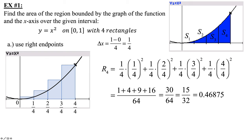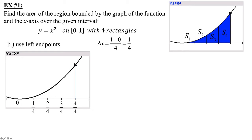Now for part B, left endpoints. The setup is the same for finding delta X: B minus A is 1 minus 0. L₄ means four rectangles using the upper left-hand corner. The first rectangle from 0 to one-fourth is tricky — the height of the upper left-hand corner is zero. So that's one-fourth times zero-over-four squared, which is 0.